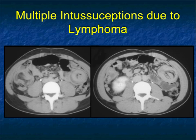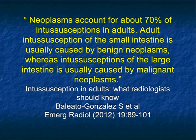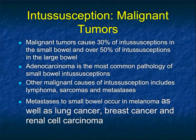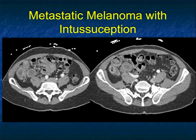Here are multiple intussusceptions in this patient, along with involvement of the patient's right kidney. Neoplasms account for about 70% of intussusceptions in adults. Adult intussusception of the small bowel is usually caused by benign lesions, whereas intussusceptions of the large bowel are usually malignant lesions. Adenocarcinoma is the most common pathology of small bowel intussusceptions, but lymphoma, sarcomas, and METs can all do the same thing, as can melanoma, lung cancer, and breast cancer.